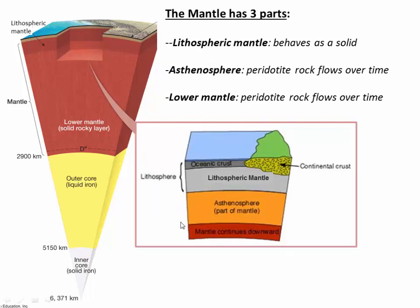The mantle can be divided into three parts. The uppermost part, shown here in dark red, is called the lithospheric mantle — it's the part of the mantle that has cooled because it's close to the surface and essentially behaves as a rigid solid. Below that is what we call the asthenosphere, and below that is the lower mantle. Both the asthenosphere and the lower mantle are also made of peridotite, but the difference is that they can actually flow over time — a silicate rock that flows like a liquid, rising and sinking in a circular fashion. That contrasts with the lithospheric mantle where it's the exact same rock, but because it's colder, it behaves as a solid.